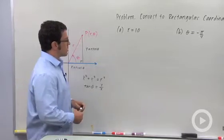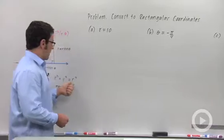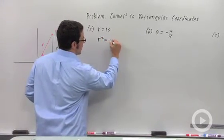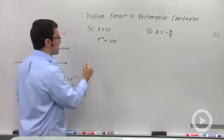So my first thought is square both sides and I'll get r squared. So I get r squared equals 100, and I replace the r squared with x squared plus y squared.